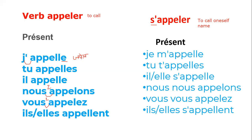Now for the pronominal verb 's'appeler', the ending is the same as 'appeler', but before 'appelle' we put a reflexive pronoun. So 'je m'appelle' — I call to whom? Myself. 'Me' means myself. And why do we put 'm apostrophe'? Because 'appelle' starts with a vowel, so you put an apostrophe when a word starts with a vowel. So it becomes 'je m'appelle' — we pronounce this together.